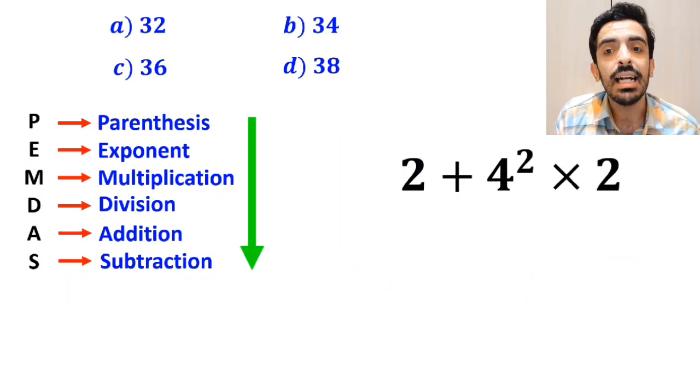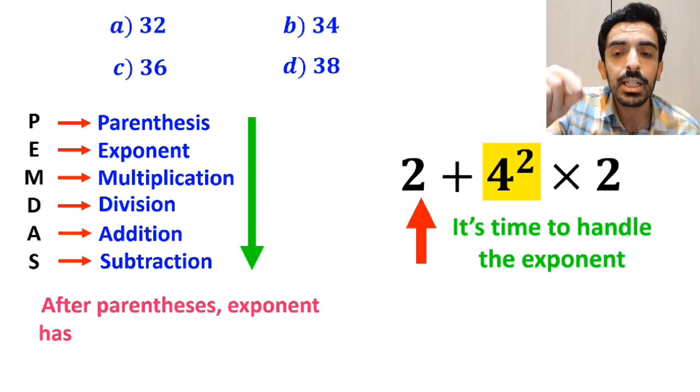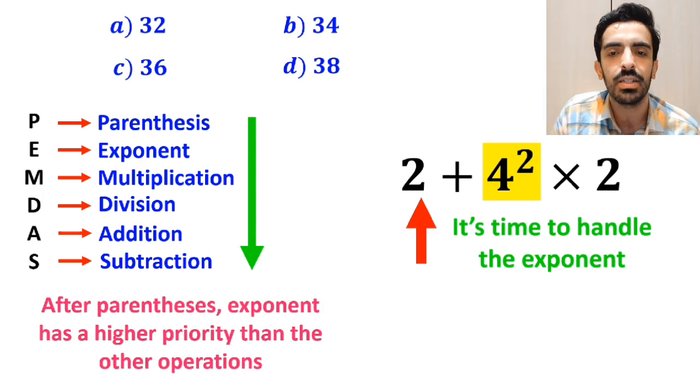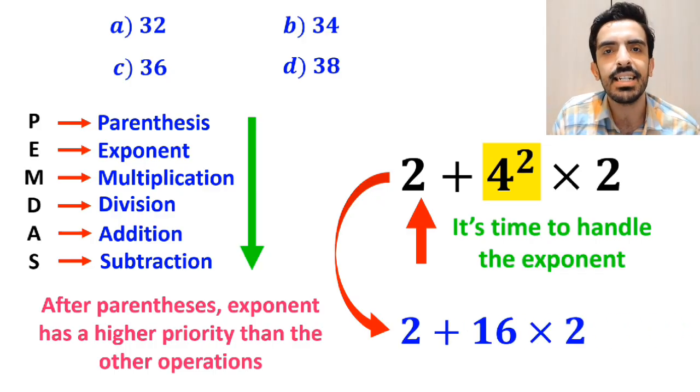In the next step, it's time to handle the exponent, because after parenthesis, exponent has a higher priority than the other operations. So, we rewrite this expression as 2 plus 16 times 2.